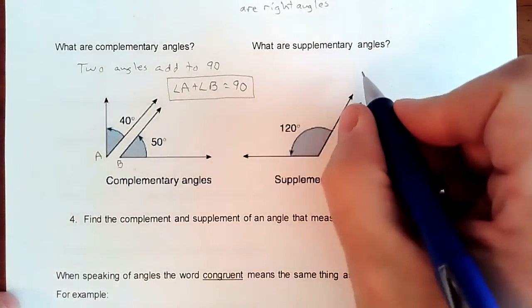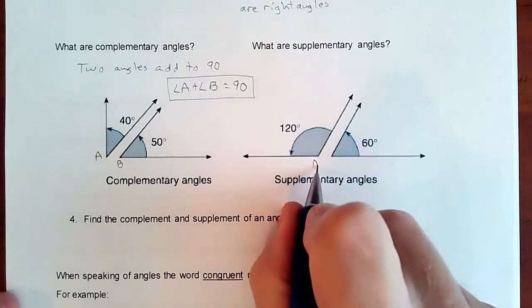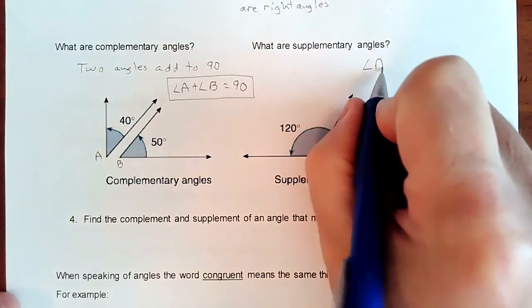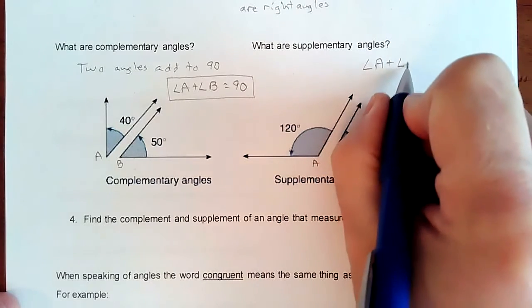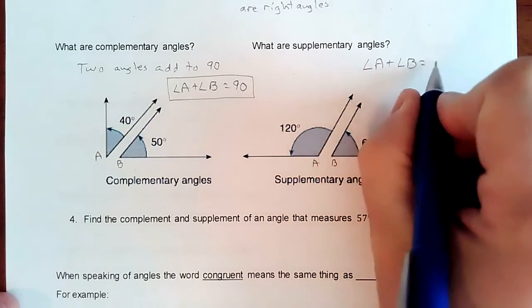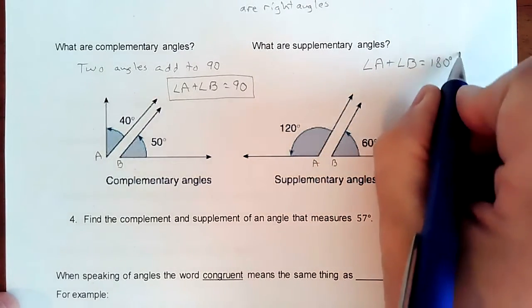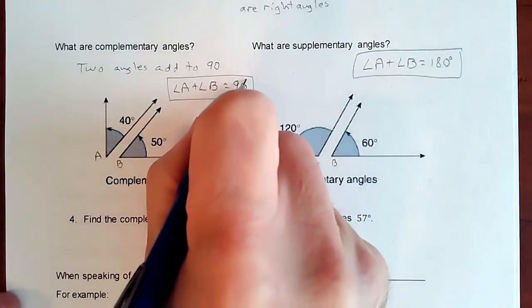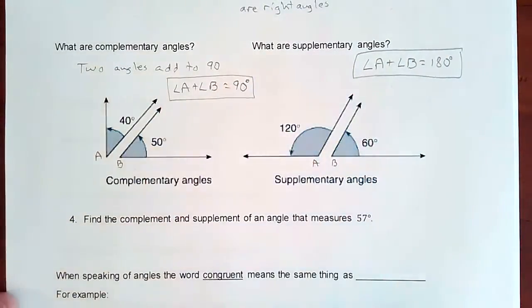So supplementary, same thing, but you're not looking at, this is angle A and this is angle B, you're looking at angle A plus angle B adding up to 180 degrees. So that's the idea of supplementary. Supplementary is they make 180 and complementary is they make 90.